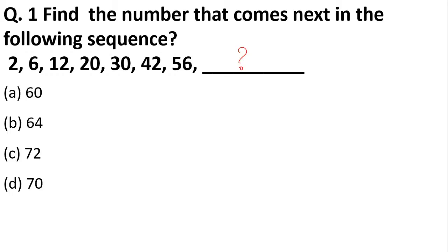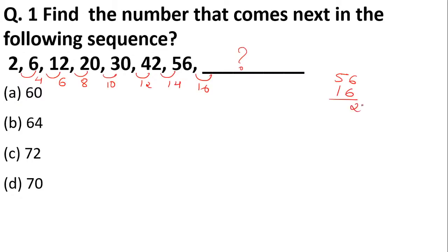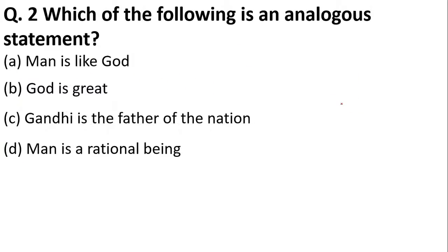For these types of questions, we have to find a relation between the numbers. The difference between 6 and 2 is 4, between 12 and 6 is 6, then 8, 10, 12, 14 — the differences increase by 2. So the next term will have a difference of 16: 56 plus 16 equals 72. The correct answer is option C.